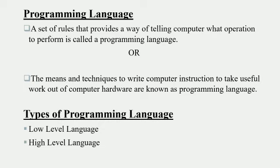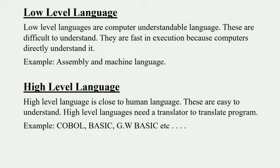The two types are low level language and high level language. Low level languages are computer-understandable languages. These are difficult for humans to understand. They are fast in execution because computers directly understand them. Low level languages are 0 and 1 languages, near to machine language. Examples include assembly language and machine language.